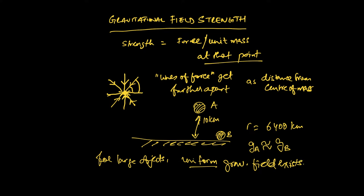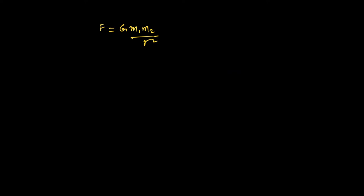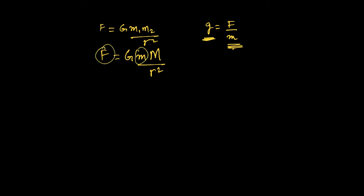What else could we learn about gravitational field strength? Let's take a look at Newton's law of gravitation once again. We just derived that g, the acceleration of gravity, is F divided by M — force per unit mass. The strength of the gravitational force is the force experienced per unit mass. So if we simplify this using a small m and a capital M for the other mass, then F divided by m equals g, which equals GM divided by R squared.